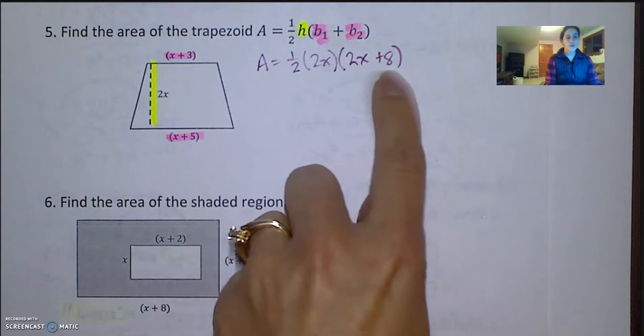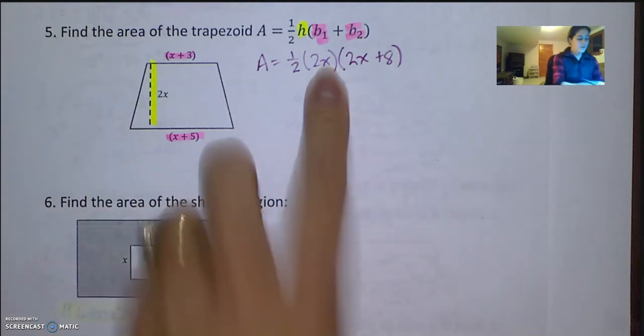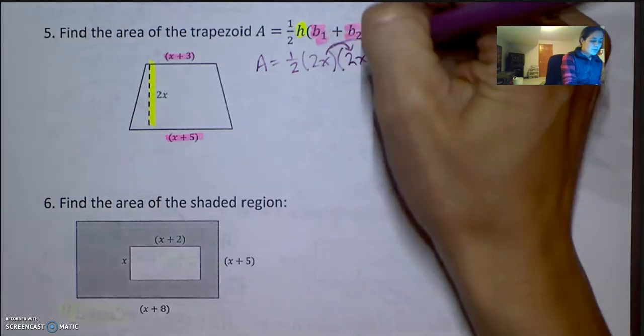So, base 1 plus base 2 equals 2x plus 8. Now, let's go ahead and distribute the 2x. We really don't have to FOIL, because this is just a monomial, so I'm going to just distribute that.